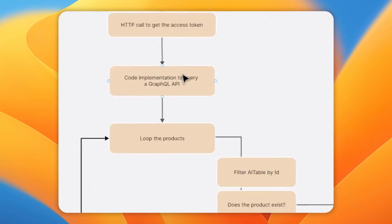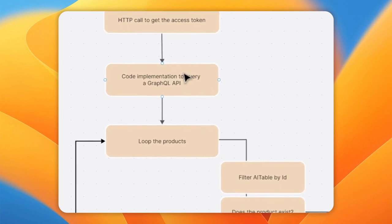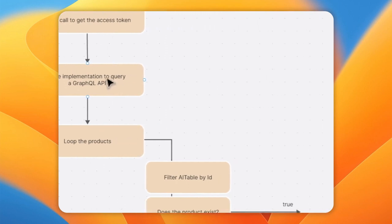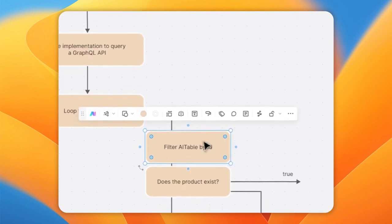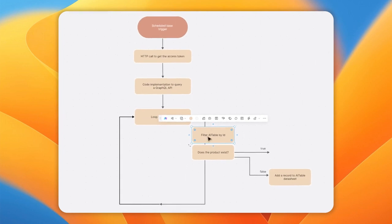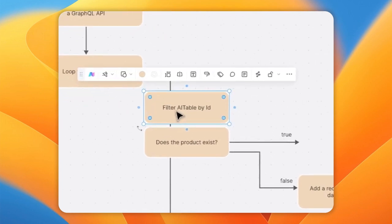I'm going to show you how to use GraphQL to construct those queries and have some tools available so you can easily create queries based on the GraphQL schema that they provide. Once we have all the different products, we can loop through them, and for each pass we're going to filter the AITable.